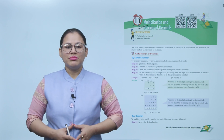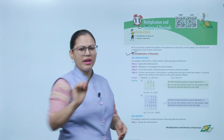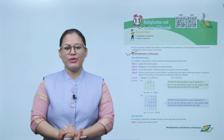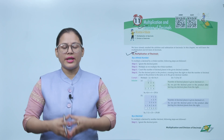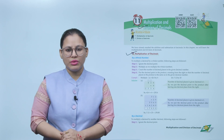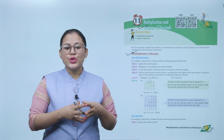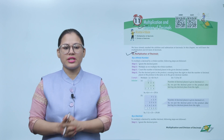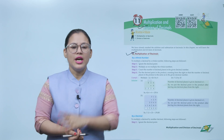Okay, so let's get started. Multiplication of decimals by a whole number: to multiply a decimal by a whole number, the following steps are followed. Step 1: ignore the decimal point. Step 2: multiply as we multiply whole numbers. Step 3: count the number of decimal places in the given decimal number. Step 4: put the decimal point in the product, counting from the right, so that the number of decimal places in the product is the same as in the given decimal number.